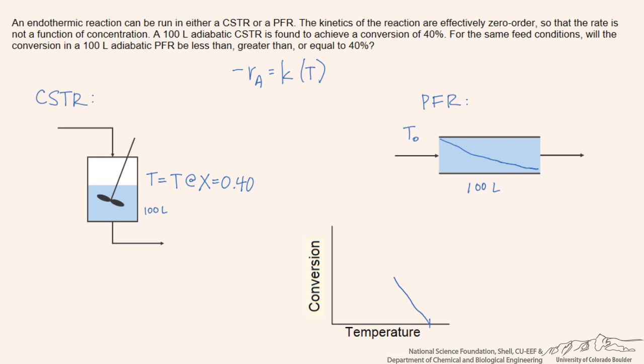What happens is that a CSTR will operate at the final value of the conversion, the 40% conversion, and its rate constant will be at that temperature. Whereas in a PFR, we'll be operating at all of these temperatures as we go up to higher and higher conversion.